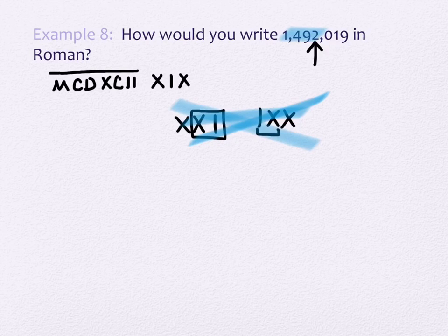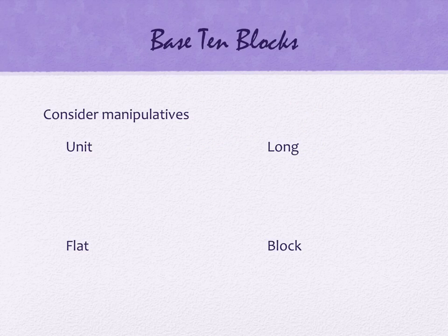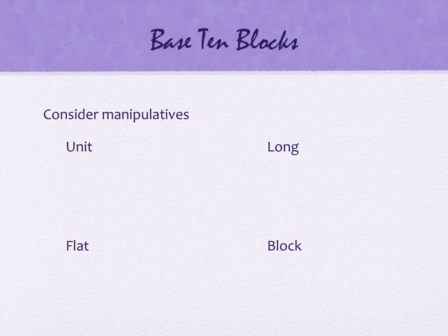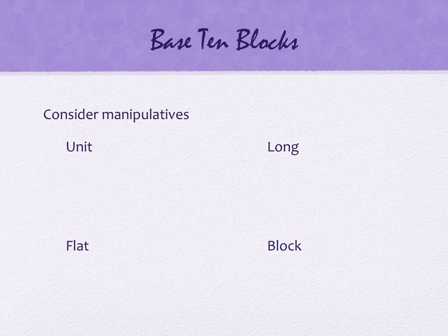A little bit of a change of directions. What we're going to talk about next is base 10 blocks — manipulatives you can use in a classroom to describe differences in place value. This is one concrete example. Money is another good concrete example: think about pennies, dimes, and dollar bills. But base 10 blocks allow you to three-dimensionalize it, and money doesn't work much bigger than a 1.